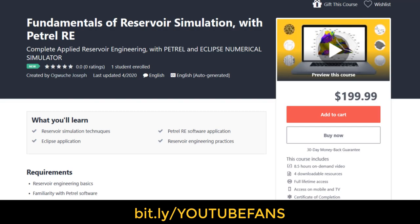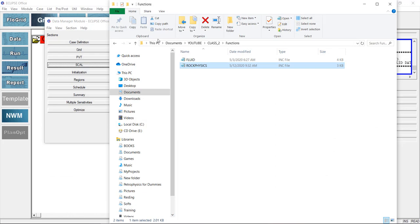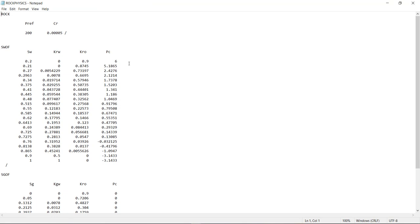Alright, let's move on with the lesson of today. Here is an include file. This file contains an already prepared scale data from correlation and we're going to import this file into our simulation model.